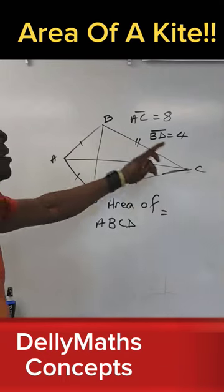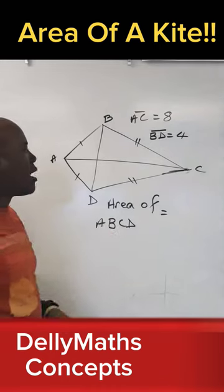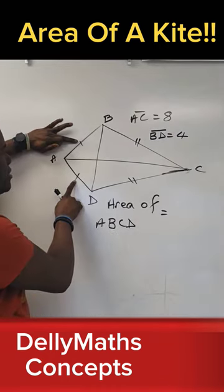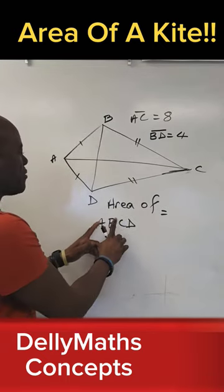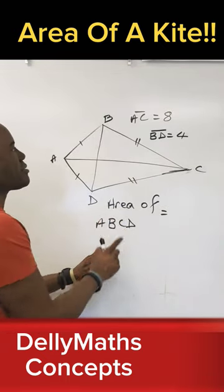Alright, so ABCD is a kite. As you can see, this side is congruent, these two sides are congruent, these two as well. So we're required to find the area of this kite.